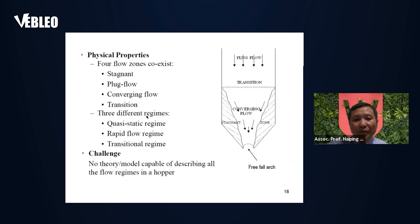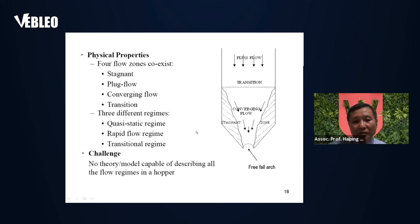The behavior of particle flow in a hopper is complicated — even though the geometry is very simple. Particles in a hopper have four flow zones: the stagnant zone at the corner, plug flow zone, converging flow zone, and transition between zones. There are also different regimes: the static region, plug flow zone, rapid flow region near the orifice, and the transition region. It is very hard to describe particle behavior for all flow regions — this is a challenging problem even with simple geometry.